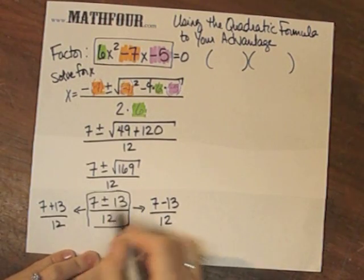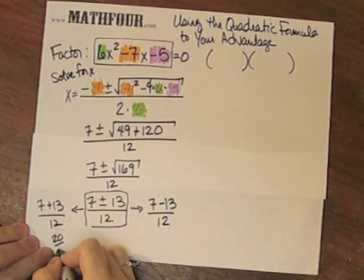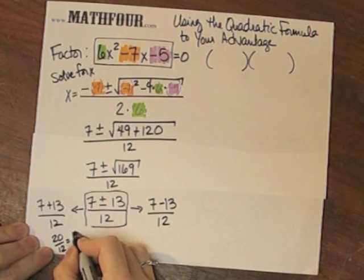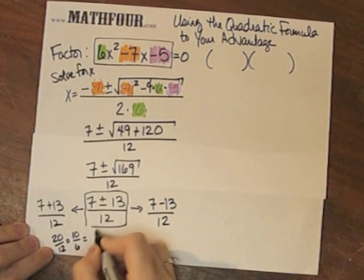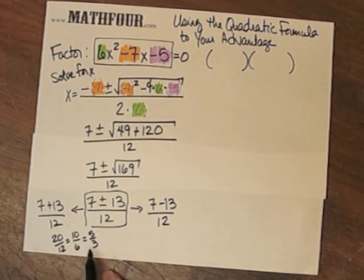And, here is 7 minus 13 over 12. So, we went from here and we went in both directions. This is 20 over 12, which reduces to 10 over 6, which reduces to 5 over 3. It is important that you reduce this completely. If you don't, you'll get yourself into a jam.